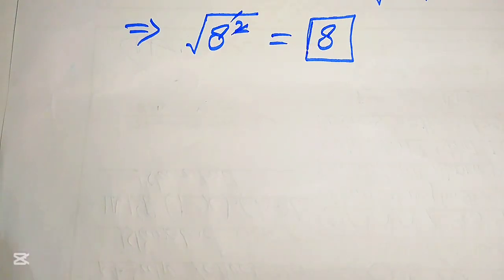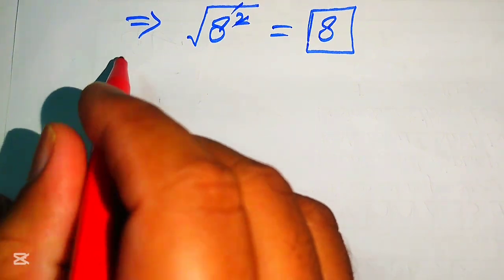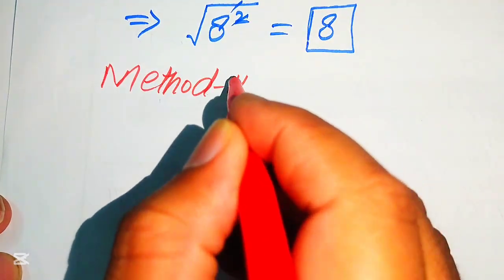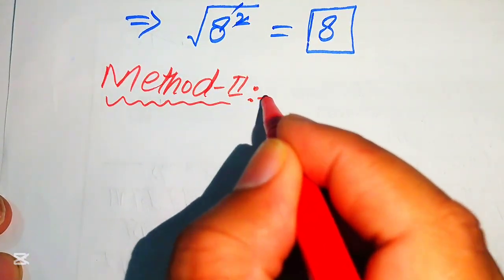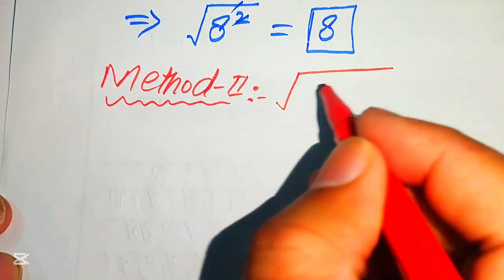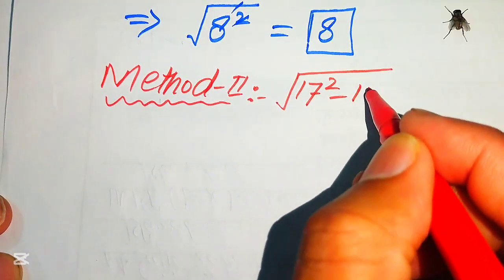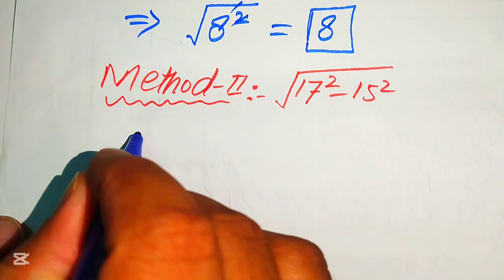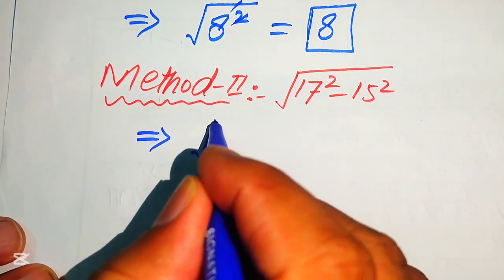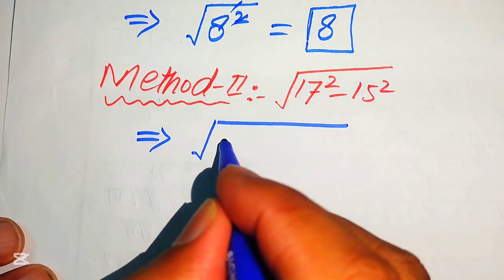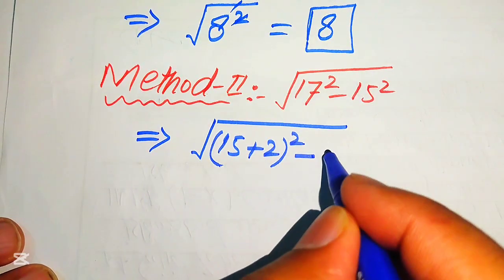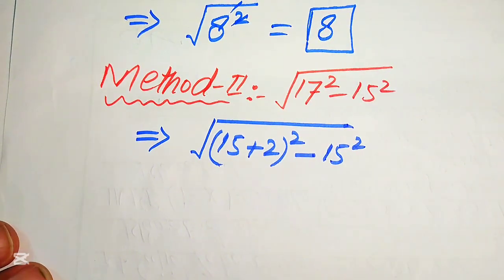Now we move forward and solve this problem using a second method. First, we copy down the given expression: the square root of 17 squared minus 15 squared. In the second method, we rewrite 17 as (15 plus 2) whole squared, minus 15 squared as it is.